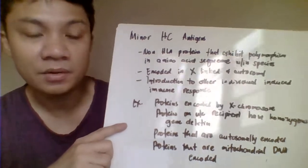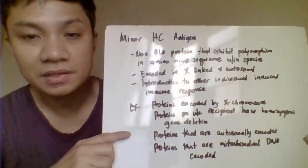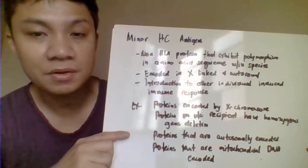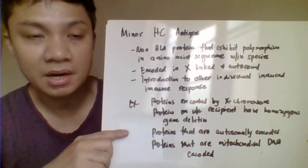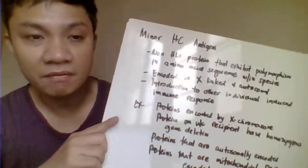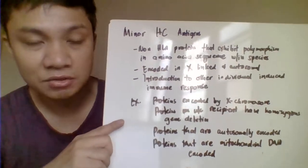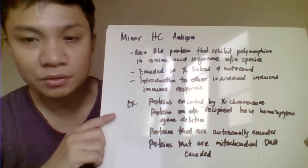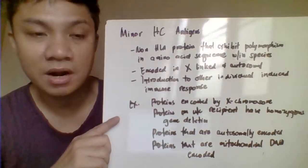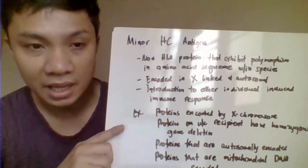Minor histocompatibility complex also contributes to the success of transplantation. Components of the minor histocompatibility complex include proteins encoded by the male Y chromosome, proteins for which the recipient has a homozygous gene deletion, autosomally encoded proteins, and mitochondrial DNA-encoded proteins.